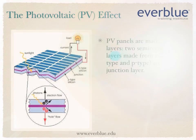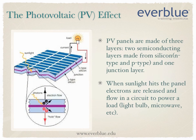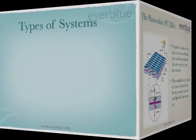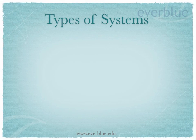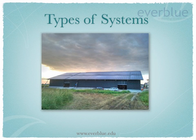Photovoltaics are made of two layers of semiconducting silicon, separated by a junction layer. As sunlight strikes the panel, electrons are released and flow in a circuit to power a load.